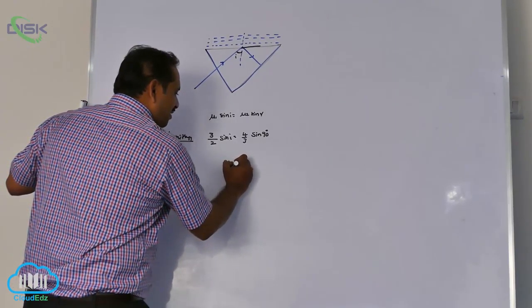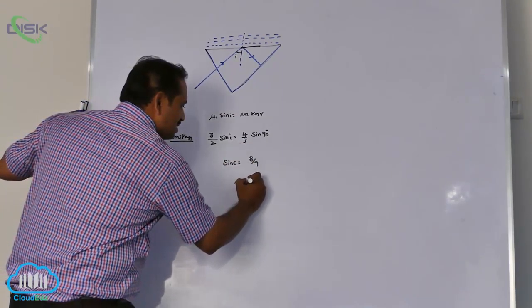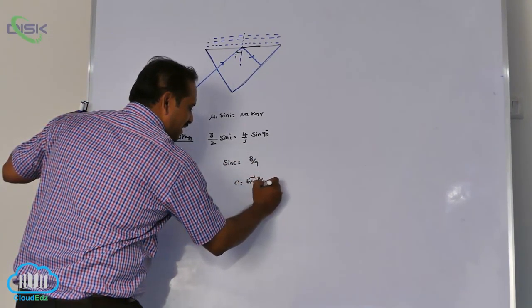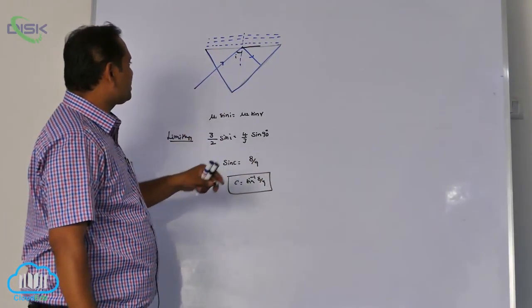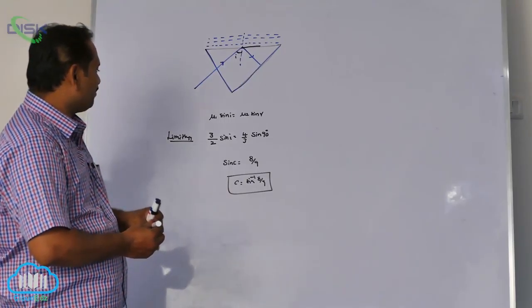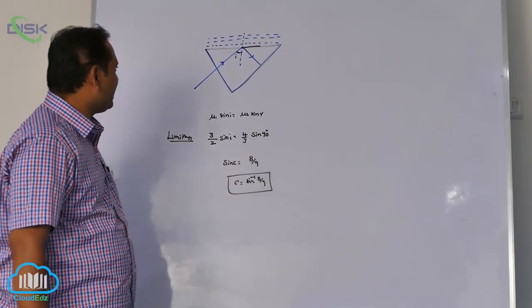Sin C equal to goes to numerator 8 by 9. C equal to sin inverse of 8 by 9. If C value of incidence is more than this value, light comes back into the same medium. They can ask you like this. C value sin inverse of 8 by 9.